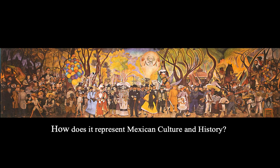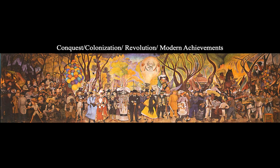When we look at it, it's divided into sections, each representing an element of Mexican history or culture. The major themes are conquest and colonization on the left side, and images of revolution and modern-day achievements on the right side. So the functionality of this mural represents conquest, colonization, revolution, and modern achievements.